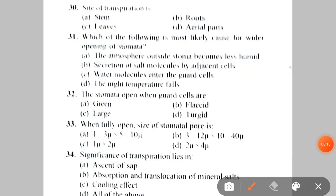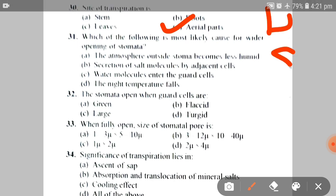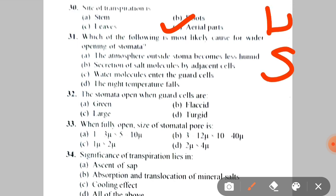Next question: the site of transpiration is A. Stem, B. Root, C. Leaves, D. Aerial parts. This is a confusing question — the correct answer is D — aerial parts, because all aerial parts can undergo transpiration, whether leaves, stem, lenticels, or cuticles.